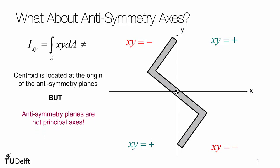So we have to be careful that in this particular example, we have a lot of area in our negative product quadrants, but almost no area in the positives. So it is actually not balancing itself out. So the anti-symmetry axis is not the principal axes.